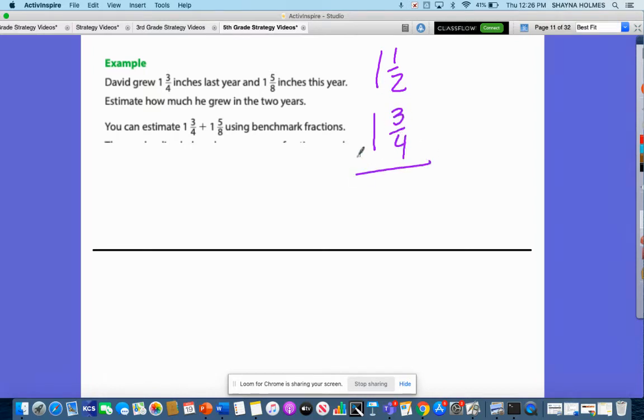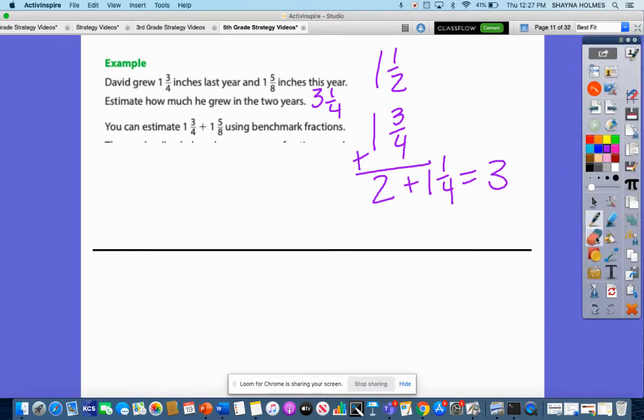Well, I know that 1 and 5 eighths is about 1 and a half and 1 and 3 fourths. I know that this will obviously be 2 and a half plus 3 fourths is probably going to get me another 1 and 1 fourth. So I would say about 3 and a fourth.